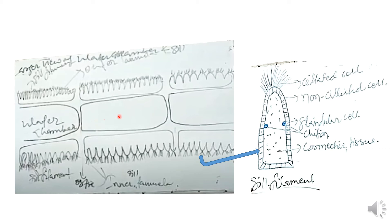We talked about the water chamber in the first slide. If you see the diagram in detail, just outside the water chambers — one, two, three and many more — each water chamber is surrounded on both sides by the outer lamella and inner lamella. The outer lamella as a whole is made up of an innumerable number of filaments, and on the other side it also has inner filaments. So the water chamber has an outer lamella and inner lamella on both sides, and each lamella contains an innumerable number of filaments.